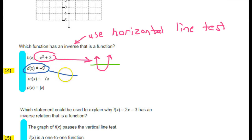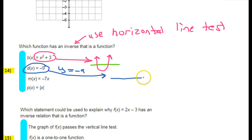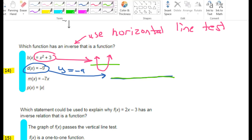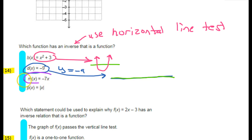The next graph is just a line — y equals negative 9, which is a horizontal line. Does this pass the horizontal line test? No. If I put a horizontal line through this graph, it hits infinitely many points. So this fails miserably — that's definitely a no.